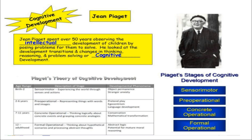Piaget had basically four stages: the sensorimotor, which is from birth to about age two; preoperational, which is your toddler years from about age two to about age six; concrete operational from age seven to 11, which is like your primary school grades; and finally, formal operations, which starts roughly around puberty and goes throughout adulthood.